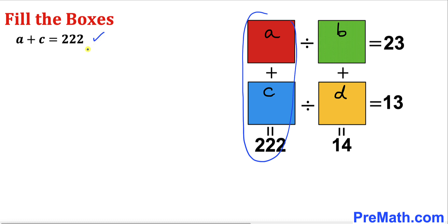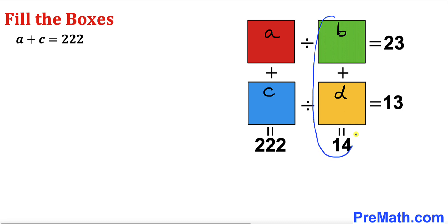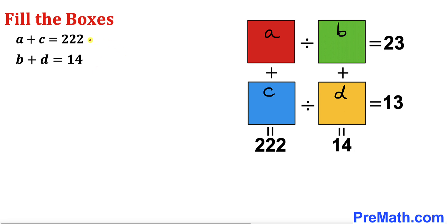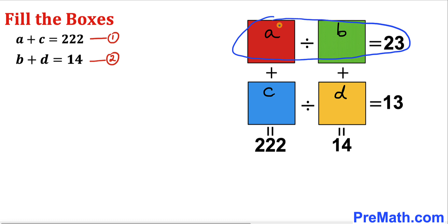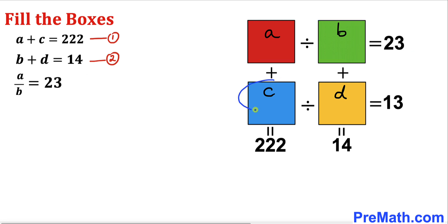Now let's focus on these two boxes vertically and we get A plus C equals 222. Likewise, focusing on the next two boxes, we get B plus D equals 14. Let me call this equation number one and the second one equation number two. Now focusing horizontally on the top two boxes, we get A divided by B equals 23.